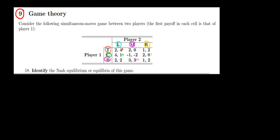Now which is going to be the equilibrium? Where do we have the two ticks? We have it here and also in this cell. So we have two equilibria: CL and BM. That's going to be the Nash equilibrium for this game, and we are done.